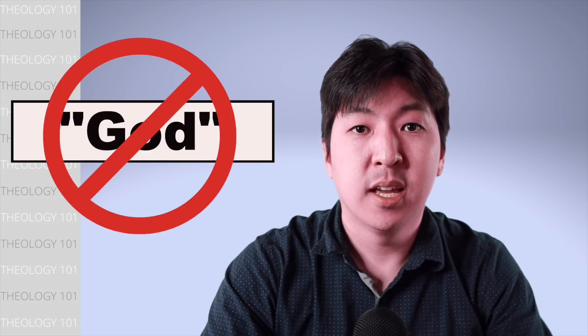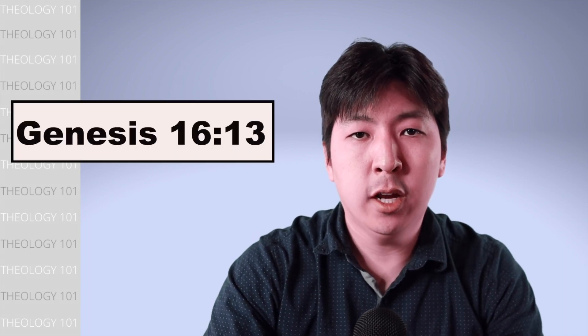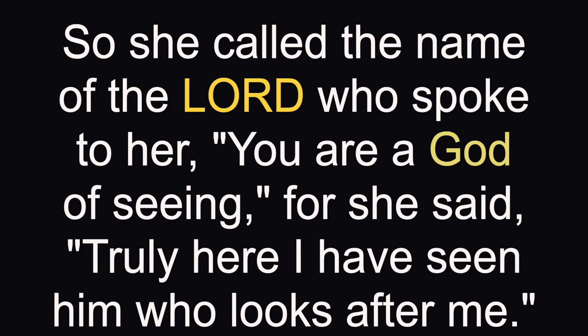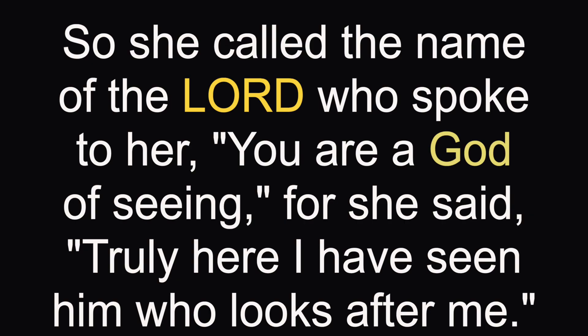Notice the pronoun the angel of the Lord uses. He did not say God will multiply her offspring, but he says, I will multiply your offspring. He is not speaking as an angel or a messenger of God. He is speaking as God himself in this context. In fact, notice how Hagar responds to the angel of the Lord later on. So she called the name of the Lord who spoke to her. You are a God of seeing. For she said, truly here I have seen him who looks after me.